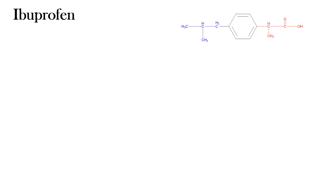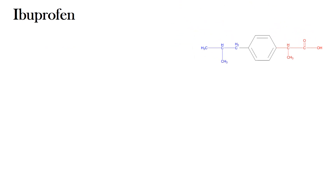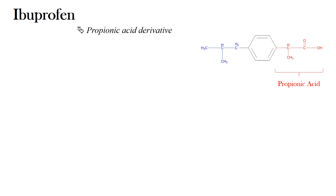Here we will begin with the chemistry. Ibuprofen is a derivative of propionic acid. The structure of Ibuprofen has three parts. The first one is propionic acid. To propionic acid, there is a phenyl group, and to the phenyl group there is attached an isobutyl group.